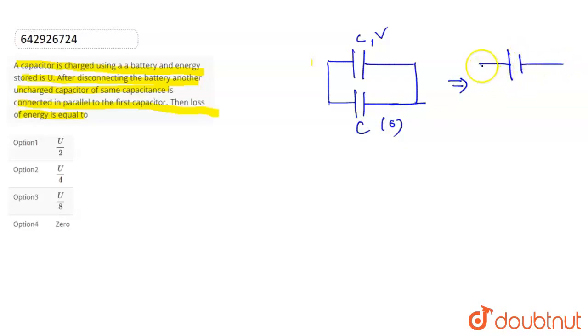It is a common voltage, this is v dash. This is C and this is C. In this condition we can see that we have a common voltage and total charge constant. So CV is equal to twice of CV dash, so V dash is V by 2.